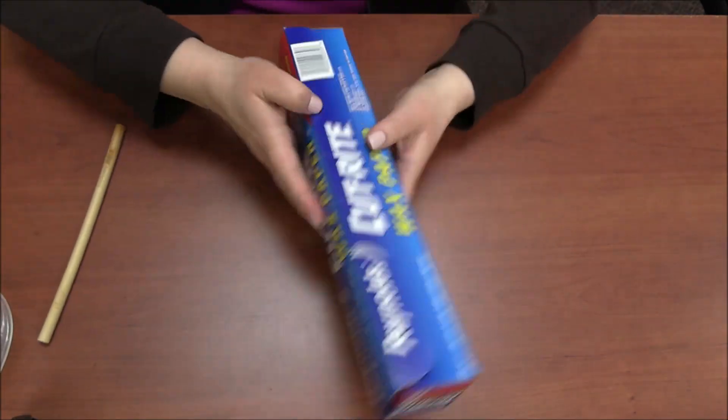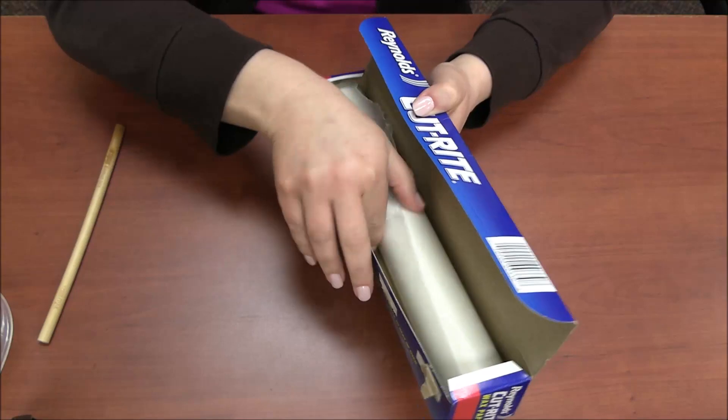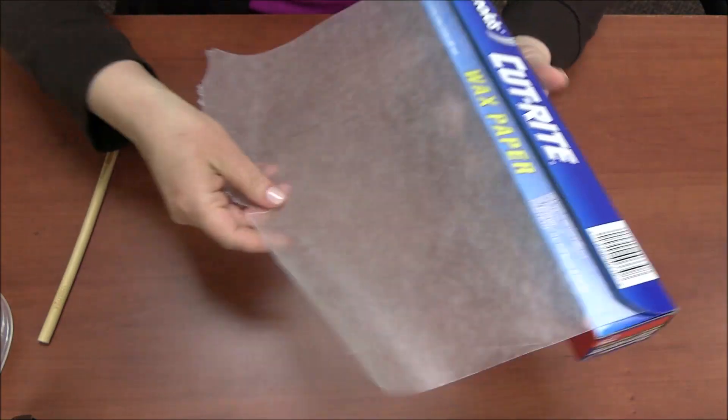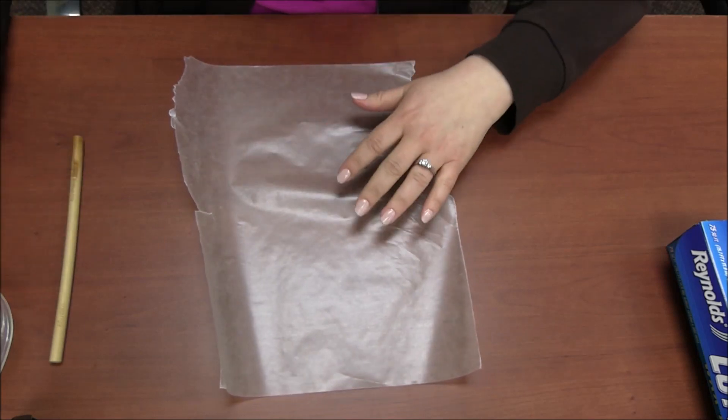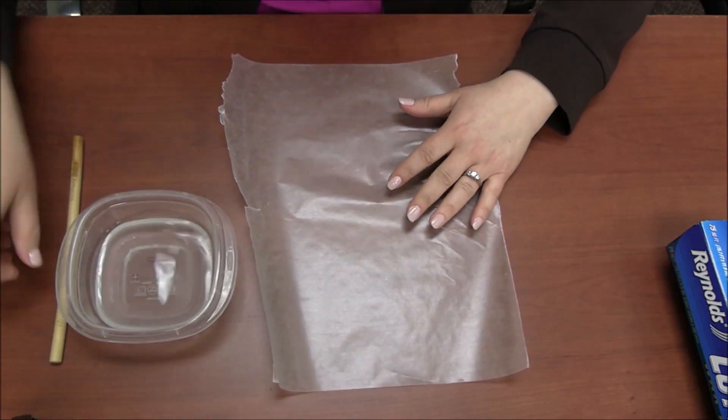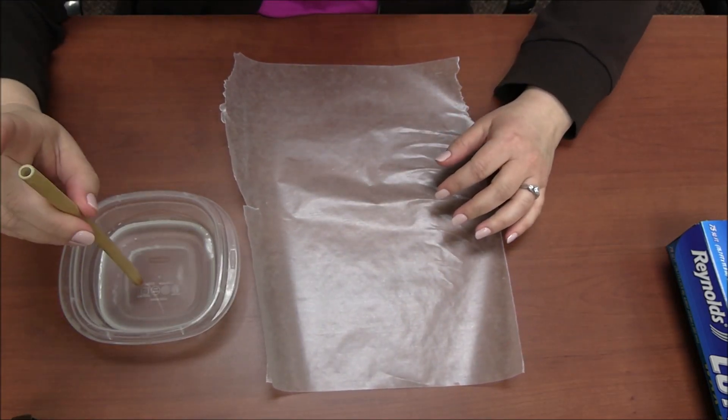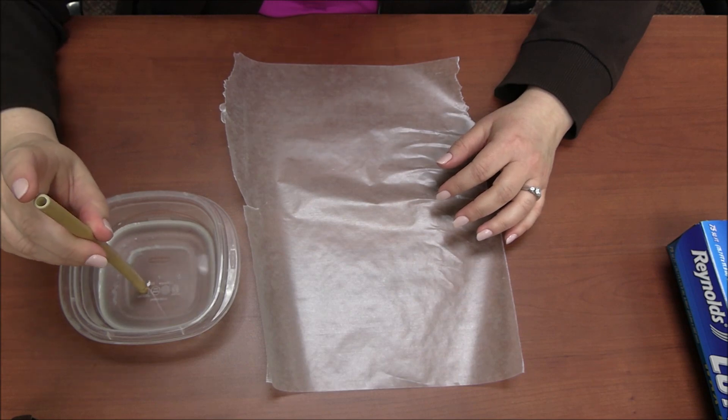So the first thing you're going to do is cut a piece of wax paper. It doesn't have to be very big, there you go. And then what we're going to do is get our water and stick the straw in the water.